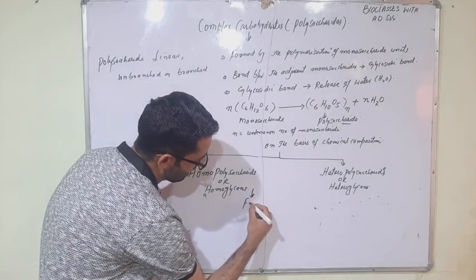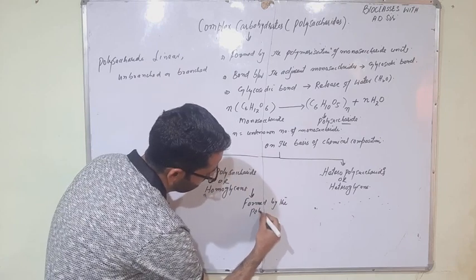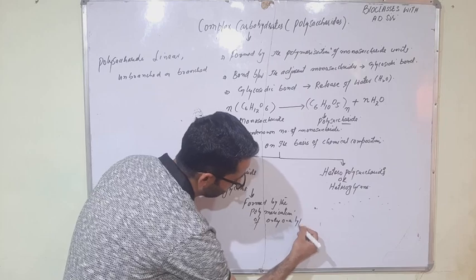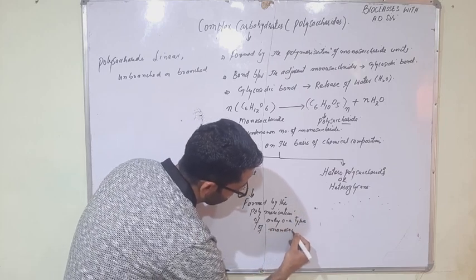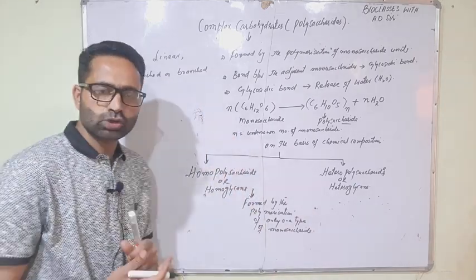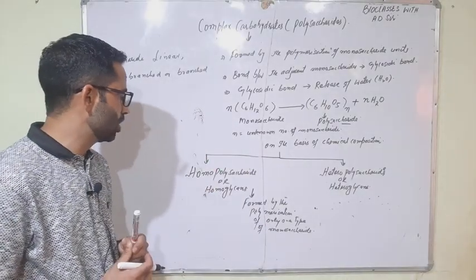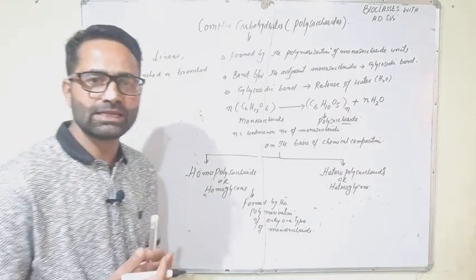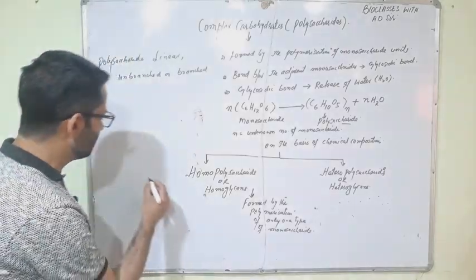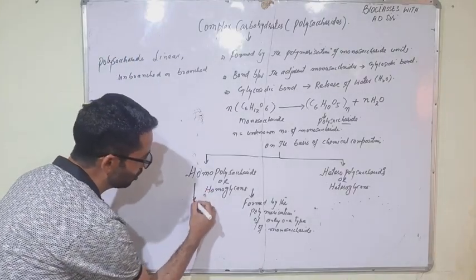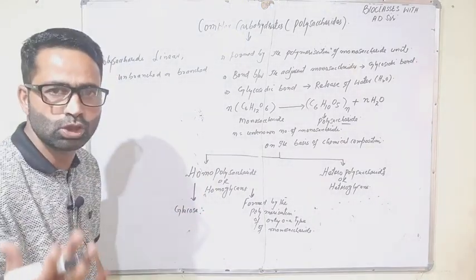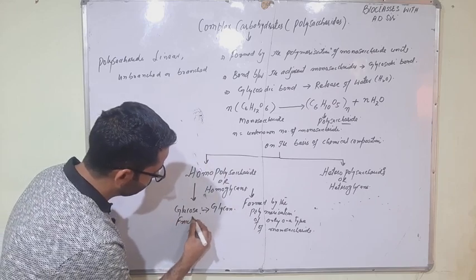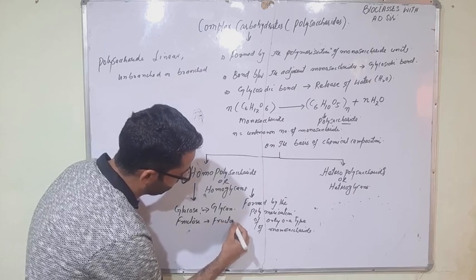Homopolysaccharides are formed by the polymerization of only one type of monosaccharide. They are accordingly named after the monosaccharide unit: if the monosaccharide unit is glucose, the homopolysaccharide is called a glucan; if it is made up of fructose, they are called fructans.